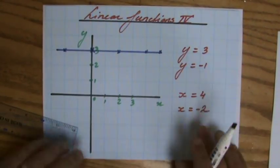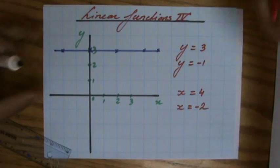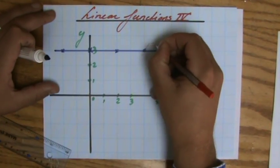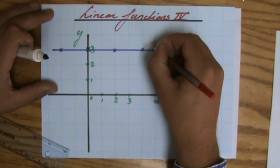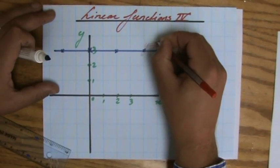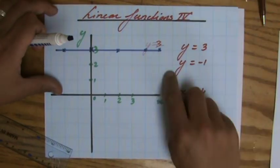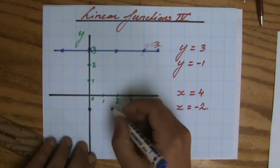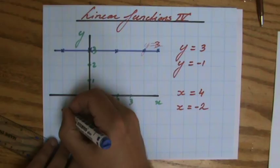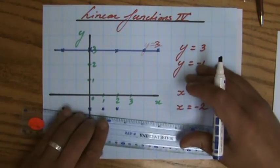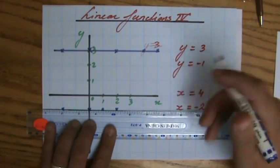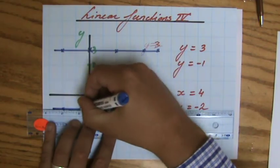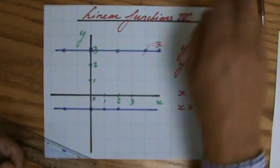Moving on to the next one, y equals minus 1. I should label that, I always label your lines. Not y equals x, y equals 3. y equals minus 1. Now where is y minus 1? That is over here, that is over here, that is over there. y equals minus 1 is the horizontal line where y is minus 1.